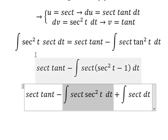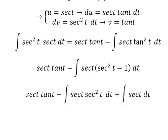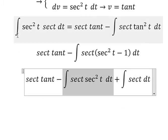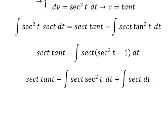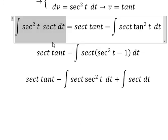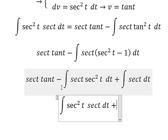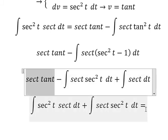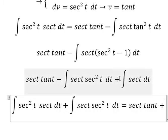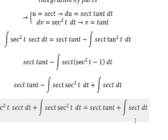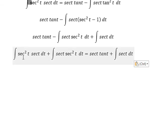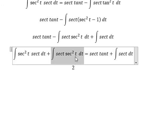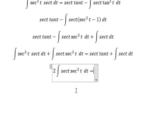We notice that this integral is the same as the original integral of sec³(t). So we move it to the left side. We will have this integral plus this integral on the left. The combined integral equals sec(t)·tan(t) plus the integral of sec(t), and we have 2 times this integral equals this expression.